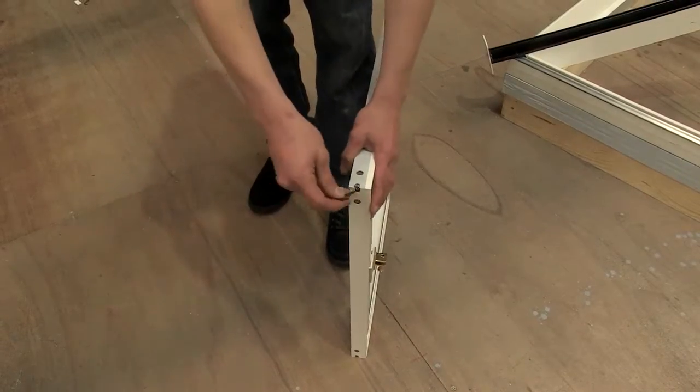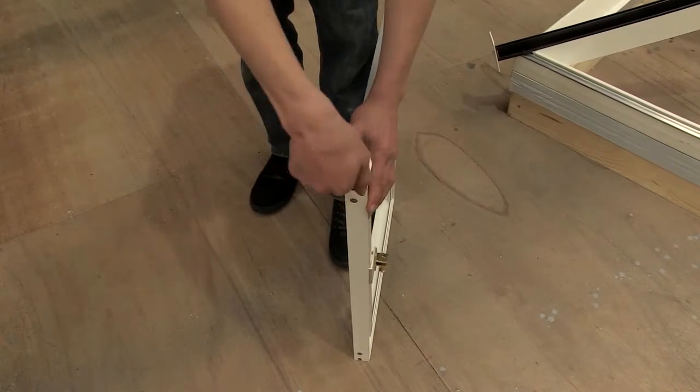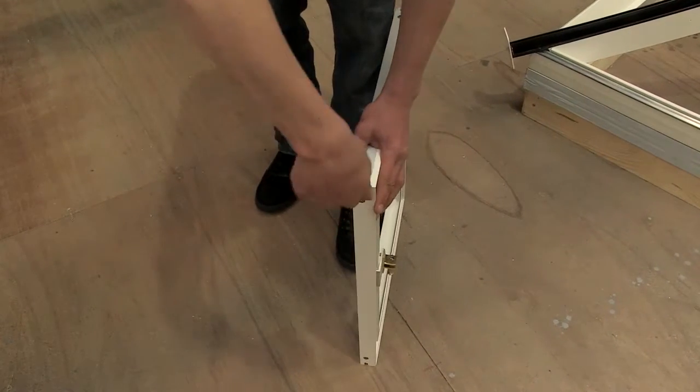Loosen the grub screw on the sash corners with an allen key prior to glazing the roof vent. Remove one side of the roof vent sash.